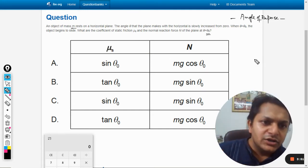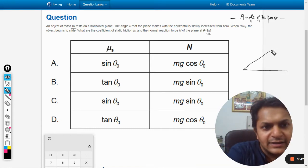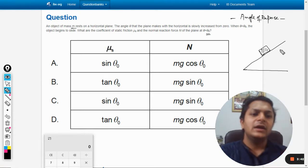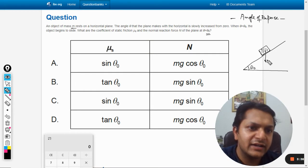Let us make this diagram. First of all, this is horizontal and this is an incline, and this is the weight. Let us say this angle is theta naught. Where is the weight acting? The weight will be acting here.